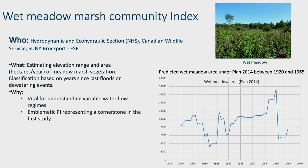The meadow marsh community index is a legacy PI — it was used to formulate the original Plan 2014. It uses water level data to predict the hectares of meadow marsh resulting from a particular regulation plan, based on how wet meadow responds to drawdown periods following high water levels. During high water level years, we would expect to see a decrease in meadow marsh area; under low water levels following a drawdown, we expect to see an increase.